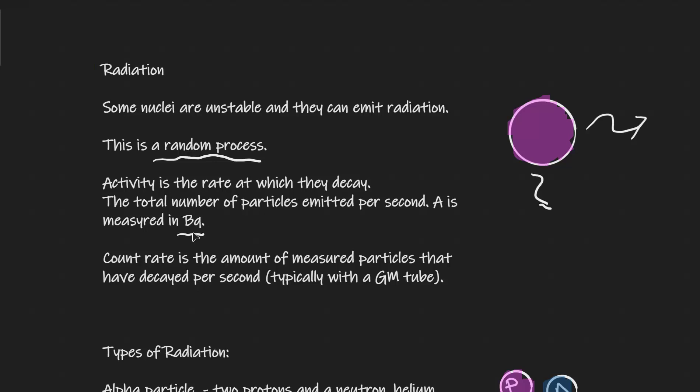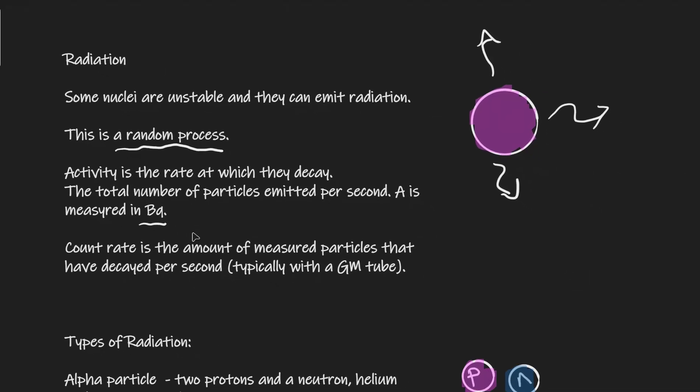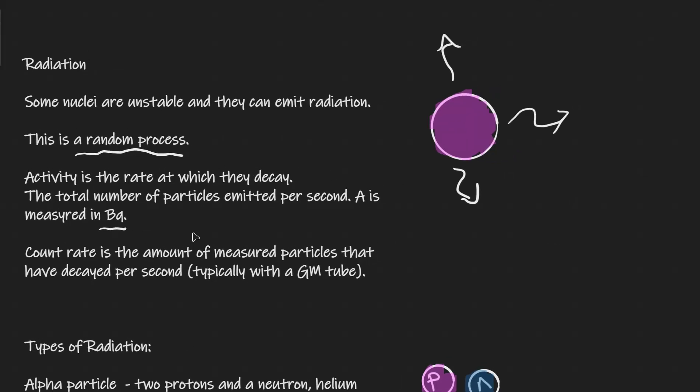So let's just say for instance that this nuclei here emits three particles per second, meaning that its activity will just be three Becquerels. Now this is to be contrasted with the count rate, which is the amount of particles that have been measured or they've been counted, typically by a GM tube.